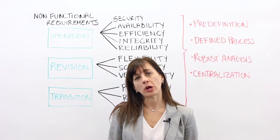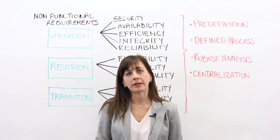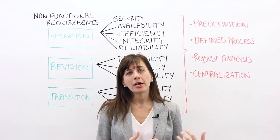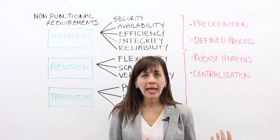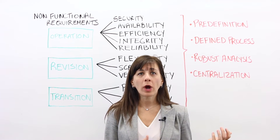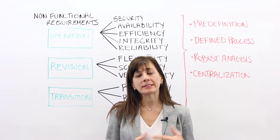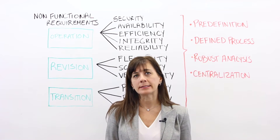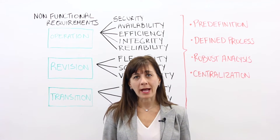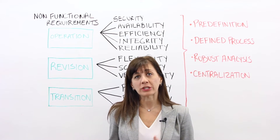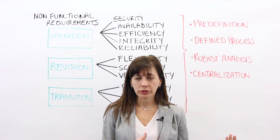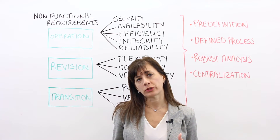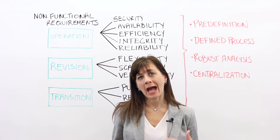A non-functional requirement, on the other hand, is more so about how the system does that. So in the case of the bank machine, the non-functional requirement might be that the system needs to dispense the cash within 10 seconds of the user submitting the request. It answers the question, how. Functionals are more so about the what, and non-functionals are much more so about the how.